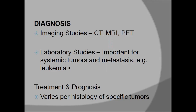For diagnosis, we go for different types of investigations, mainly radiological. Apart from the clinical examination, the main investigations are CT scan, MRI, and in cases of metastases, PET scan as well. We can also have different laboratory investigations to rule out any systemic or metastatic disease.